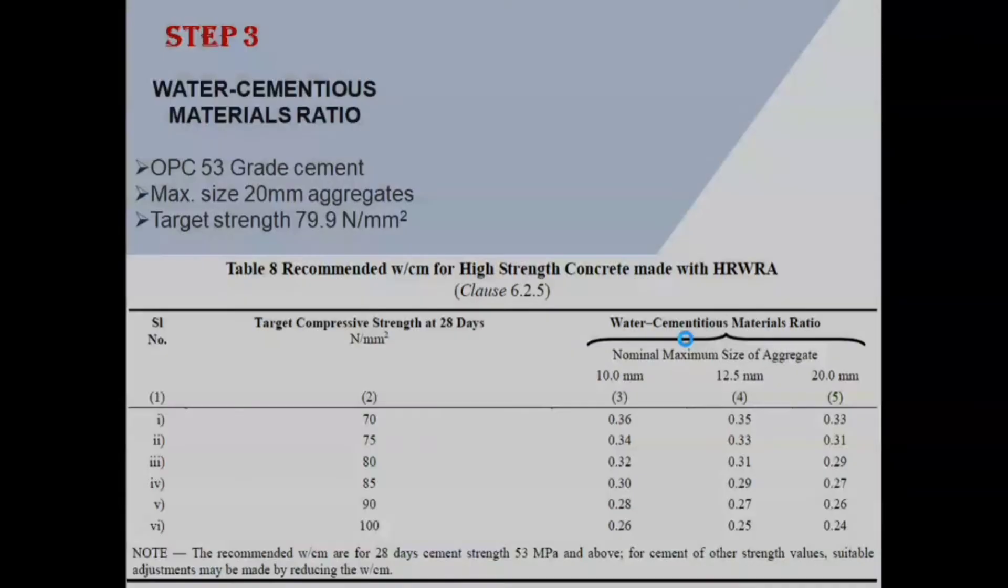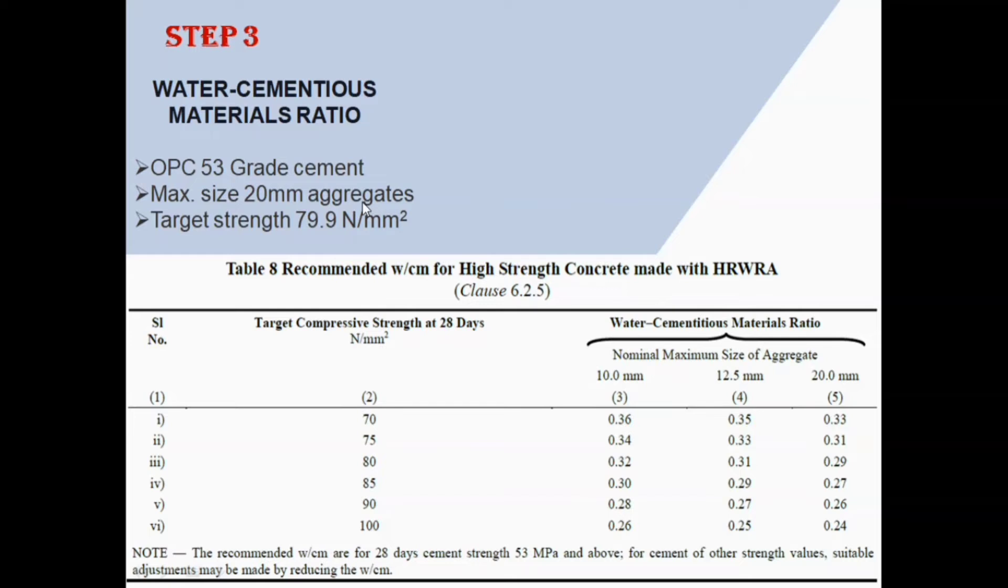Step 3: Water-cement ratio. We've taken OPC 53 grade cement, maximum size 20 millimeters aggregates, and from step 1, target strength 79.9 N per square millimeter. From Table 8, the water-cement ratio required for the target strength of 79.9 N per millimeter squared is 0.29 for 20 millimeters aggregate.